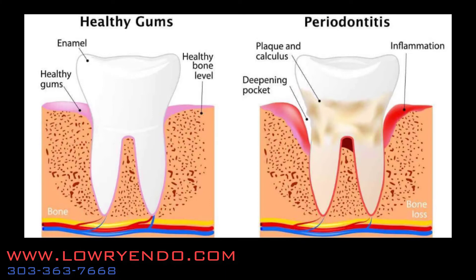Perio is Latin for around and dont is Latin for tooth. So a periodontist is a dental specialist who manages the tissues around the tooth — mainly the gum tissue and the bone surrounding the tooth. In a healthy situation, the gum tissue and the bone is tightly around the tooth with very little space.